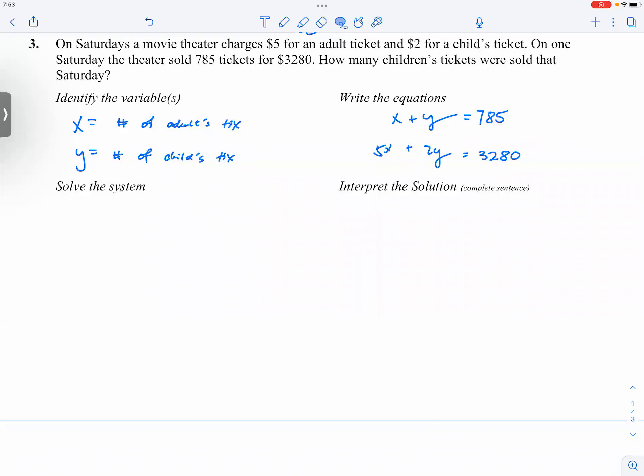So we have the variables set up. We have the equations written down: 5x + 2y = 3280. And since the question is asking for only the number of children's tickets...